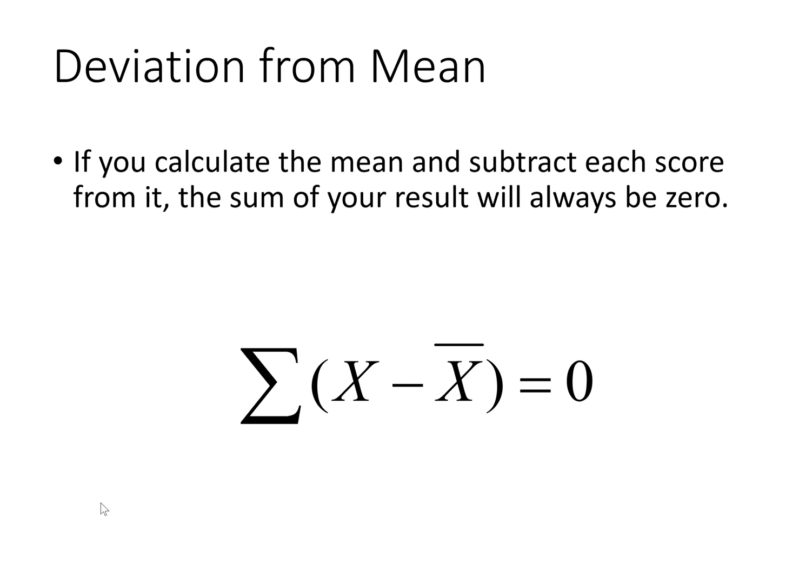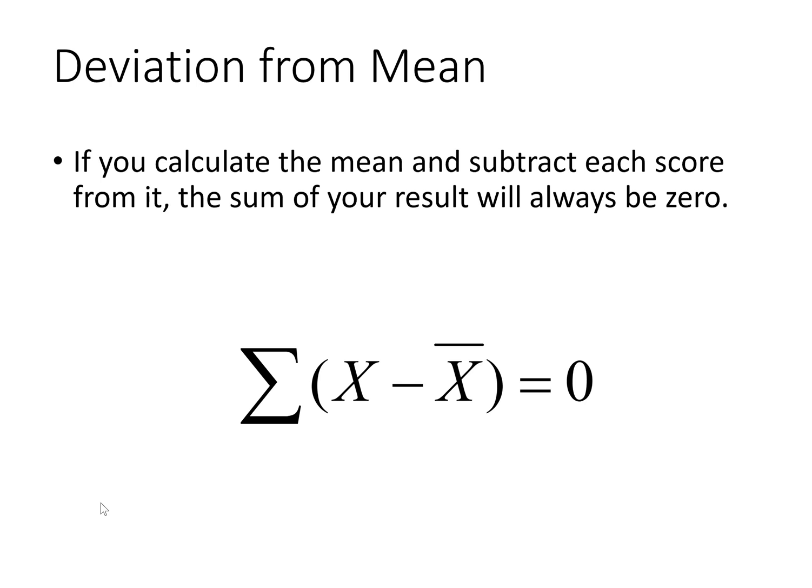So that presents a problem because it doesn't measure anything because it always adds up to zero. So one solution to this problem is the sum of the squared deviations from the mean, which is literally taking the sum of the squared deviations from the mean. So you look at every score and its difference from the mean, you square that difference, and then you add up all of the squared differences.